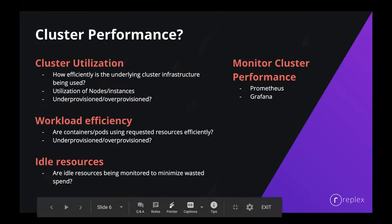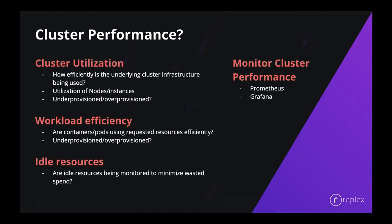In today's webinar, we want to discuss cluster performance in terms of three distinct aspects. The first is cluster utilization — we'll explore how efficiently the underlying infrastructure is being used, including the utilization of individual cloud instances and the cluster as a whole. We'll also look at the concepts of under-provisioning and over-provisioning, and how we could lower cloud costs by targeting higher utilization. The second aspect is workload efficiency — looking at the efficiency of containers and pods and whether they're using requested resources efficiently, which can potentially give us better utilization.